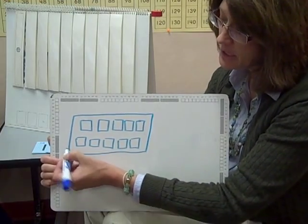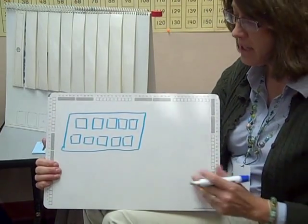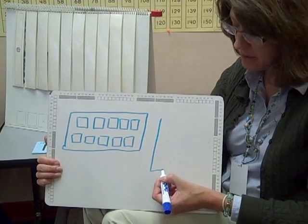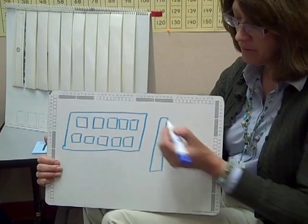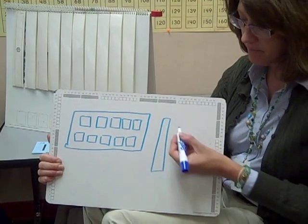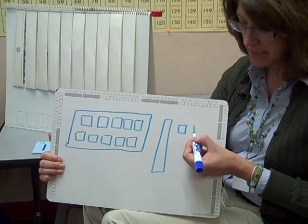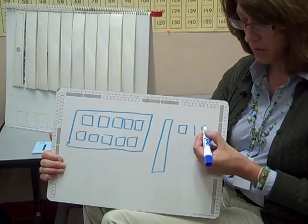Then they would develop the math drawing for one thousand by putting those ten hundreds into a rectangle that later they will call a quick thousand. They will represent one thousand with a rectangle that's turned this way. And they would represent one hundred, ten, and one.